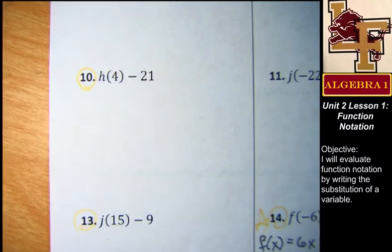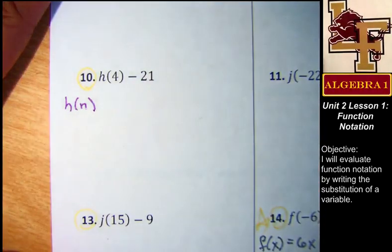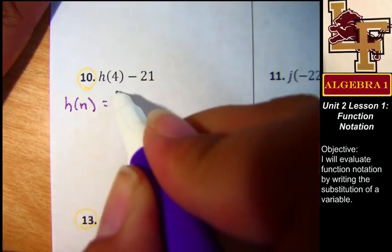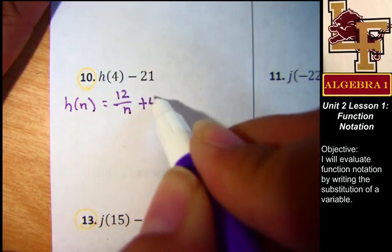All right, my h function is h of n. This time we put n instead of x, that's fine, it just means that n is our input variable. The function is 12 over n plus 43.